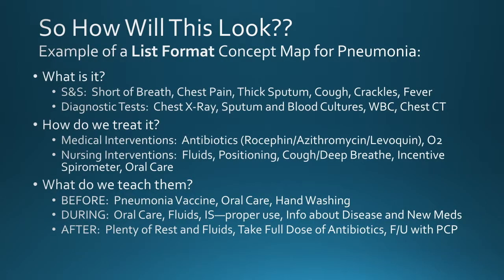So how is it going to look? Here's our first example in list format — my preferred method. Using pneumonia: for what is it, signs and symptoms include shortness of breath, chest pain, thick green sputum, cough, and crackles on assessment. Don't forget fever. Diagnostic tests to prove pneumonia include a chest X-ray, cultures, blood cell count, and a chest CT.